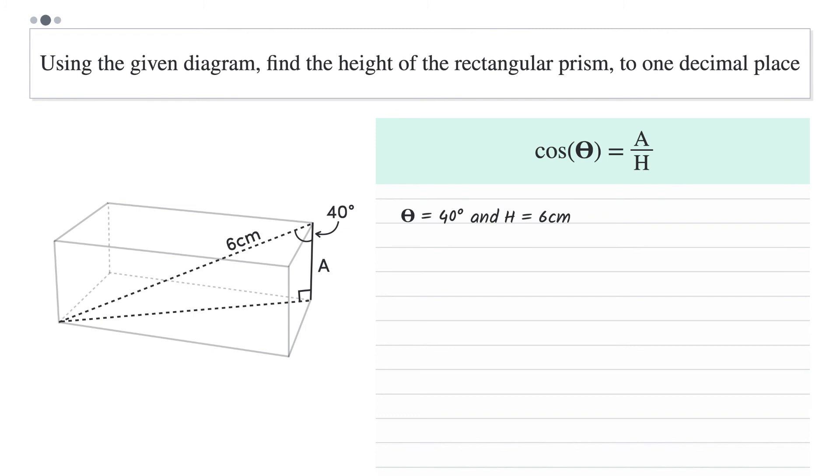Substituting these into the formula gives us cos 40 equals A over 6. Multiplying both sides by 6 to get A as the subject leaves us with A equals 6 times cos 40. Using a calculator, this comes out as 4.59626. Finally, we'll round this to one decimal place as the question requires. So, we can conclude that the height of the prism is 4.6cm to one decimal place.